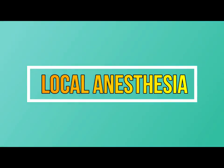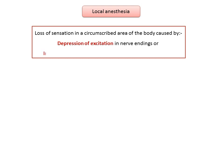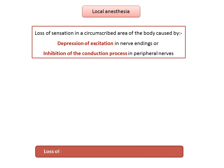Local anesthesia: the discovery in the late 1800s of a group of chemicals with the ability to prevent pain without inducing loss of consciousness was a major step in the advancement of the medical and dental professions. Local anesthesia has been defined as loss of sensation in a circumscribed area of the body caused by depression of excitation in nerve endings or inhibition of the conduction process in peripheral nerves. An important feature of local anesthesia is that it produces this loss of sensation without inducing loss of consciousness.